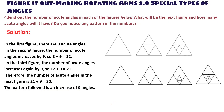Question 4: Find out the number of acute angles in each of the figures below. What will the next figure have and how many acute angles? Do you notice any pattern? In the first figure there are 3 acute angles. In the second figure the number increases by 9, giving 12. In the third figure it increases by 9 again, giving 21. Therefore the next figure will have 21 plus 9 equals 30 acute angles. The pattern followed is an increase of 9 angles each time.